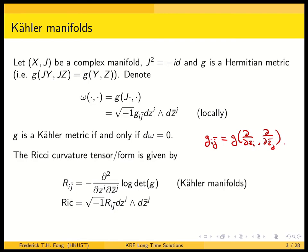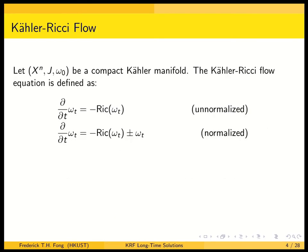The Ricci tensor is sometimes denoted as a tensor, but sometimes it's more convenient to denote it as a form — the Ricci form. The Kähler-Ricci flow is simply the Ricci flow on a Kähler manifold. It is known that if you start the Ricci flow from a Kähler metric, the Kähler condition is preserved along the flow. So, given a compact Kähler manifold X with complex structure J and initial metric omega_0, we call this the Kähler-Ricci flow.